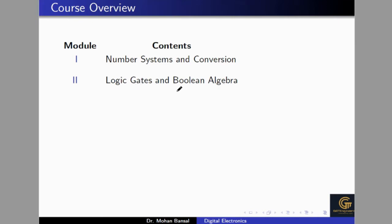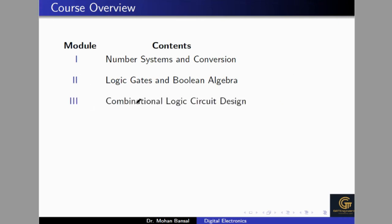In this part we will also discuss the Sum of Products (SOP) and Product of Sums (POS) forms of Boolean expressions. And we will minimize the expressions with the help of K-map. These things we will discuss in this content.